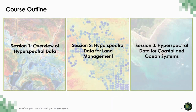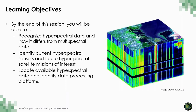This series will consist of three sessions. During this first session, you will be provided with a general overview of hyperspectral data. In the subsequent sessions, we will review applications of hyperspectral data for land applications and coastal and ocean systems, and we will also have a demonstration of accessing data. The learning objectives for the first session are: recognize hyperspectral data and how it differs from multispectral data; identify current hyperspectral sensors and future hyperspectral satellite missions of interest; and locate available hyperspectral data and identify data processing platforms.